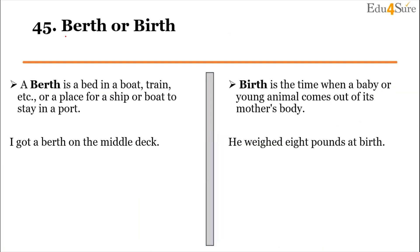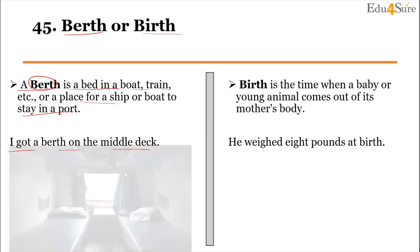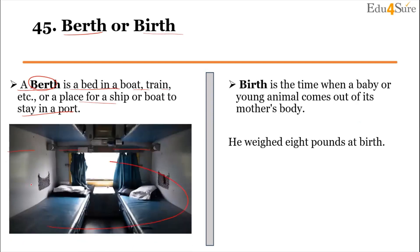Next word pair is 'berth' and 'birth.' A berth is a bed in a boat, train, etc., or a place for a ship or boat to stay in a port. Basically, the beds we see in trains are called berths. For example: 'I got a berth on the middle deck.' The photo shows what a train berth looks like.